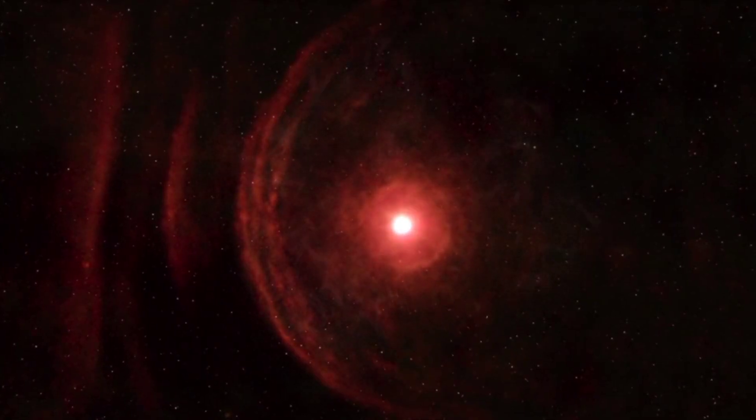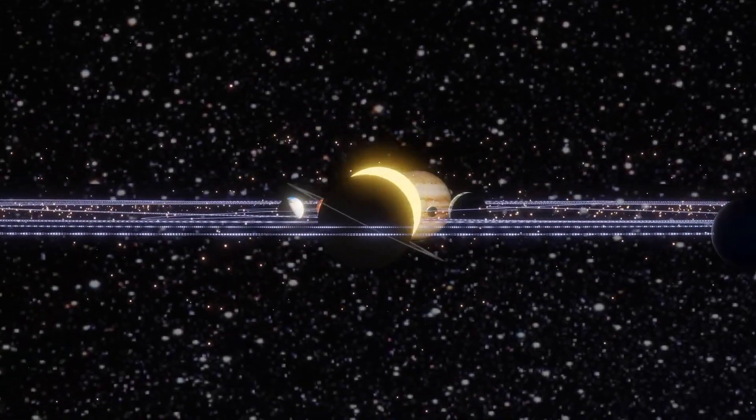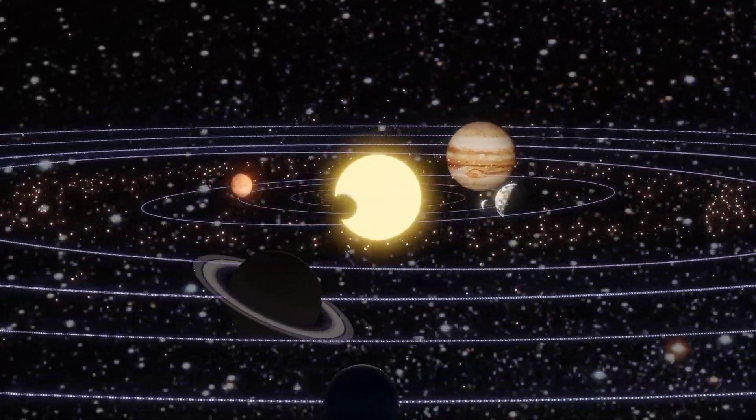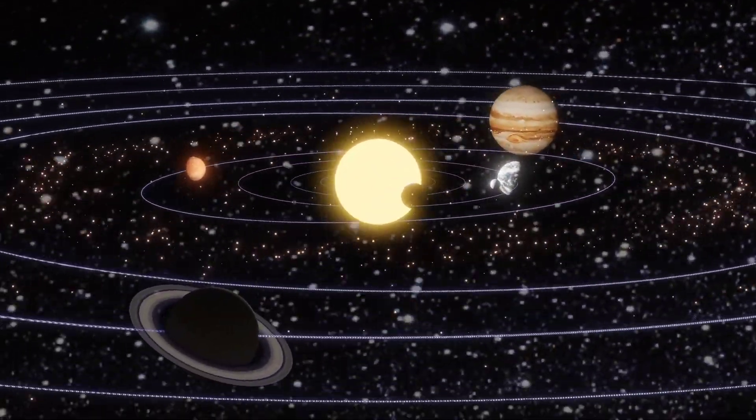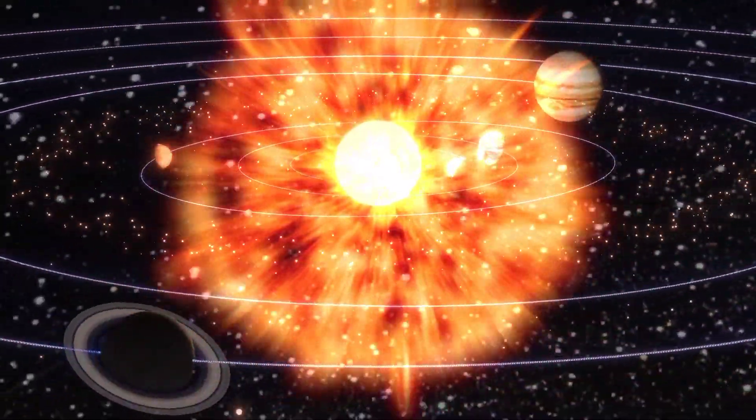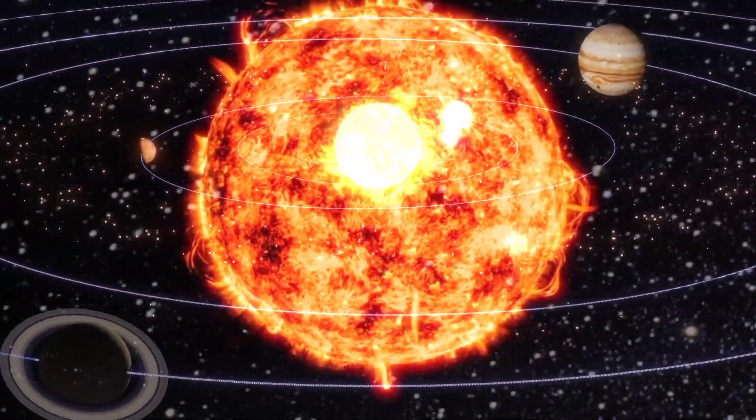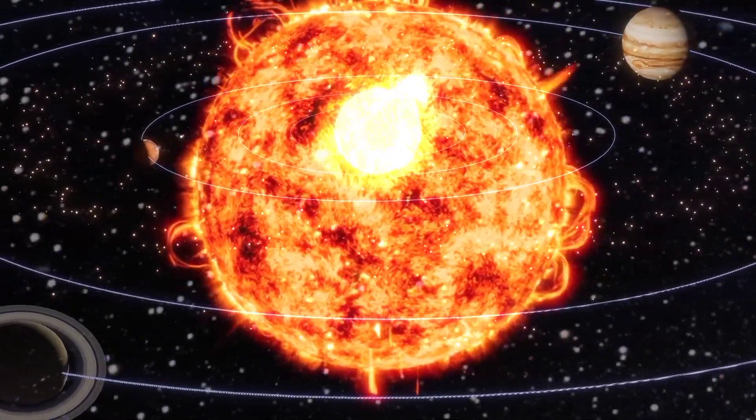Stevenson 2-18 defies comprehension. Imagine Earth orbiting not within the familiar embrace of our sun, but within the fiery maw of this colossus. Its outer edge would graze the orbit of Saturn, making our solar system a mere speck within its vastness.